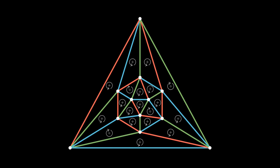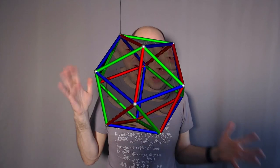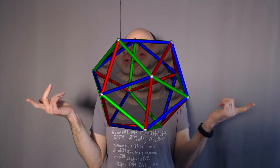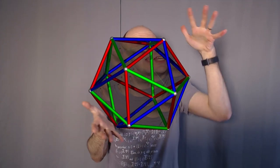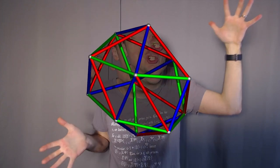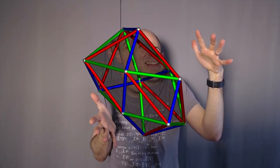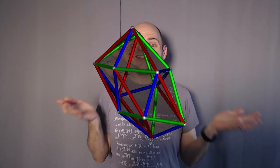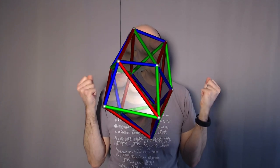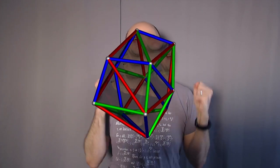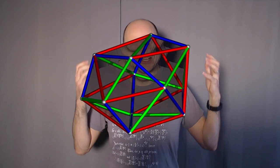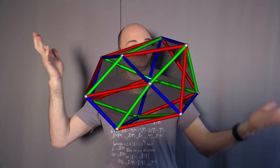Let's take a look at this in 3D. Here it is — our three-colored icosahedron. What's cool is that I could take all the red edges and expand them slightly, and take all the blue edges and shrink them slightly. Then what I've got is an icosahedron built out of 20 congruent scalene triangles — a scalene icosahedron.